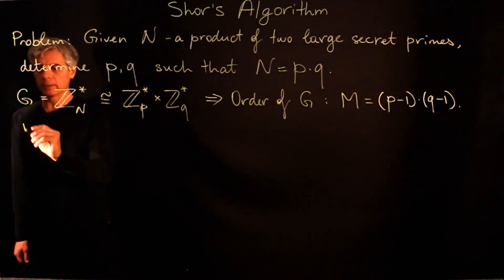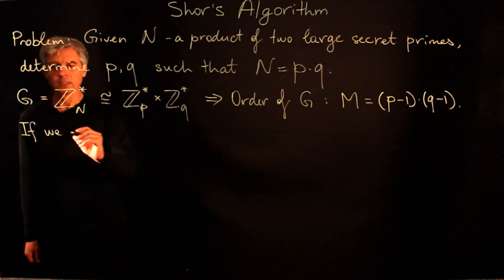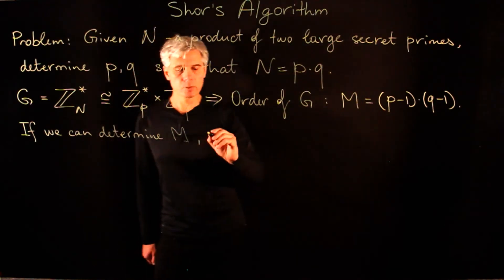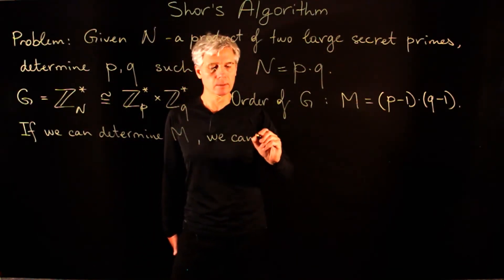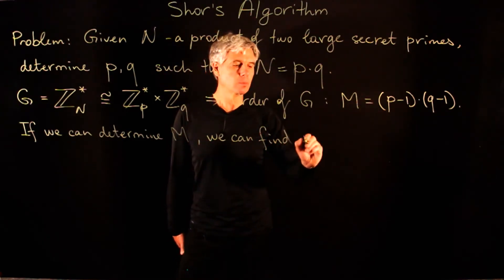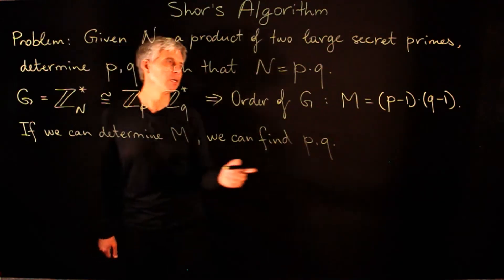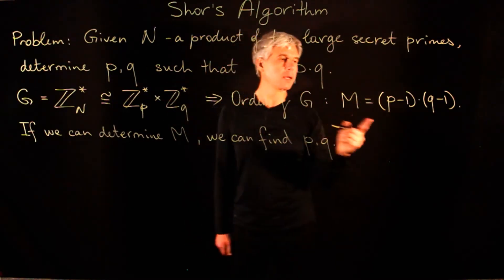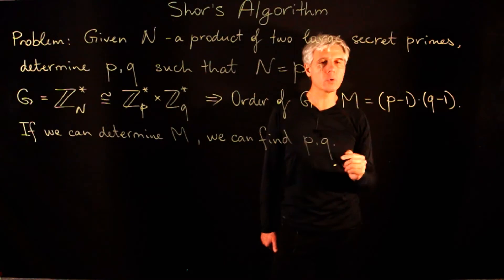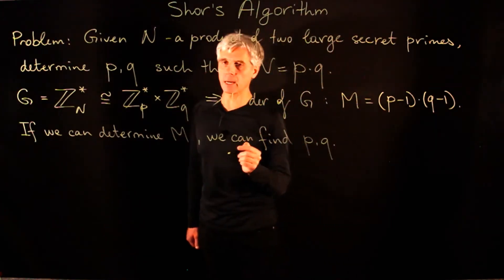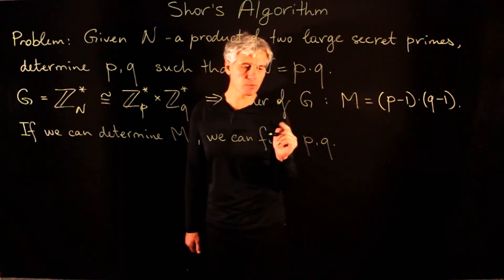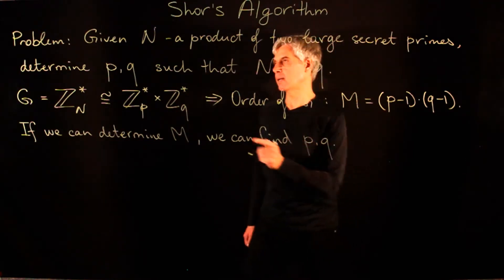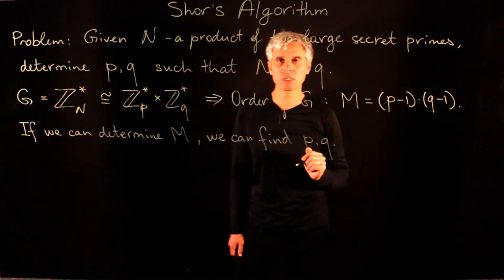So if we can determine the value of m, we can find p and q. We can form a quadratic relation: if we know the product n = pq and this number m, then we will also know p+q. We can form a quadratic equation whose roots will be our secret primes p and q. So if we have m and n, then this factorization is easy to obtain.